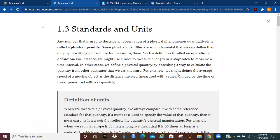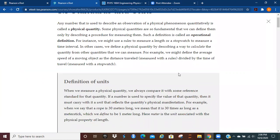Any number that can be used to describe an observation of a physical phenomenon quantitatively is called a physical quantity. Some physical quantities are so fundamental that we can define them only by describing a procedure for measuring them. Such a definition is called an operational definition.